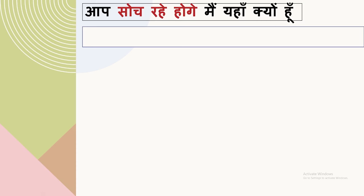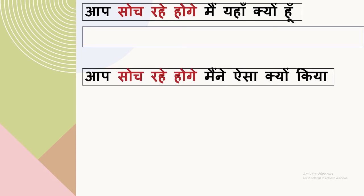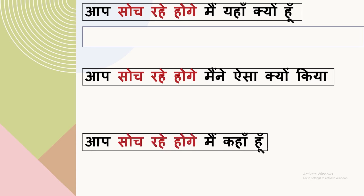You are thinking, why am I here? You are thinking, why have I done this? You are thinking, where am I? Now you are thinking, how can I put these sentences in English? So stop thinking. I am going to tell you how that could be done. Keep on watching this video, and I assure you that you are going to learn some very useful things in this video.